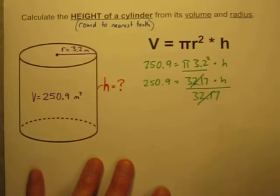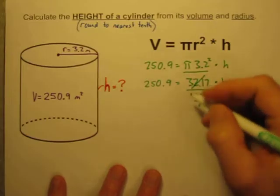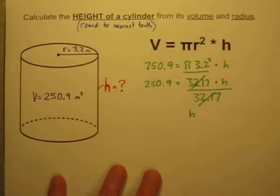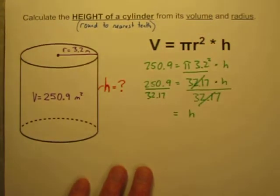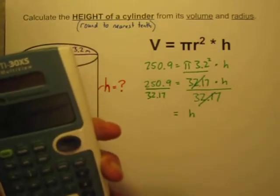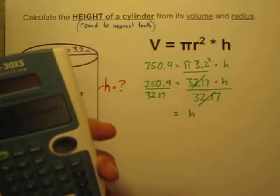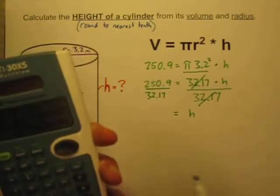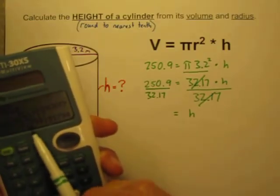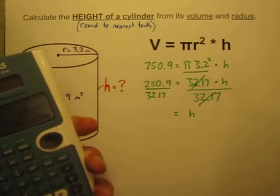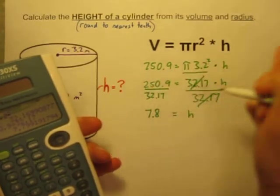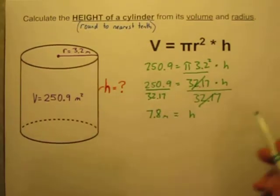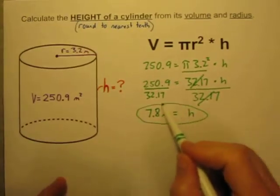And 32.17 divided by 32.17 is just 1, leaving h all by itself on the right hand side. And if I divide this side by 32.17, I'm going to divide this side by 32.17. So let's go 250.9 divided by 32.17 equals 7.799. If I'm rounding to the nearest tenth, let's just round that up to 7.8. And these measurements were in meters, so I know my height is 7.8 meters tall.